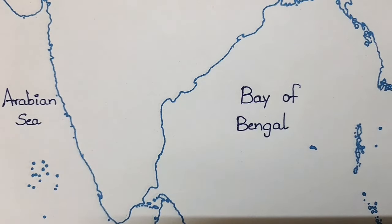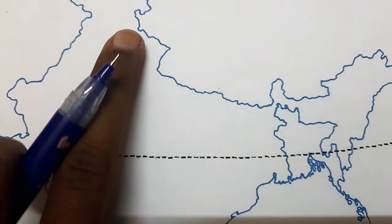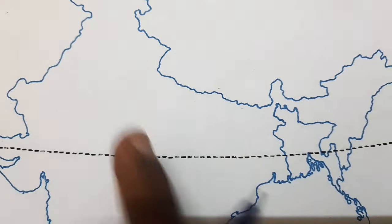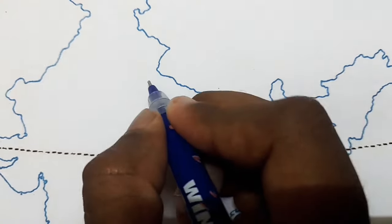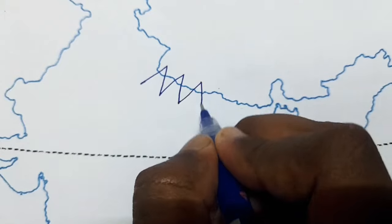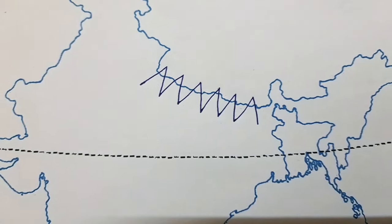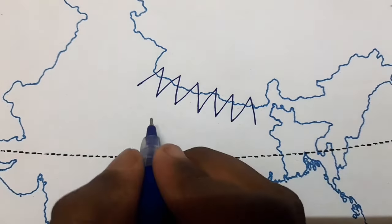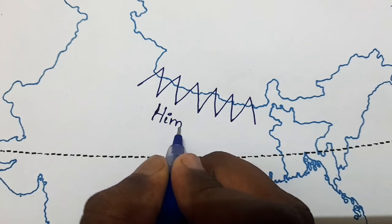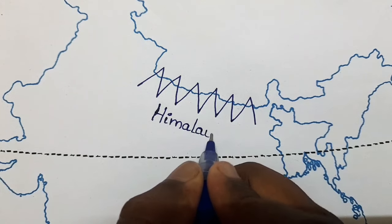Next, coming to the northern side of India and now pointing the Himalayas. Here in this place on the India map we point the Himalayas. For more understanding we can draw a line from the Himalayas and point it.